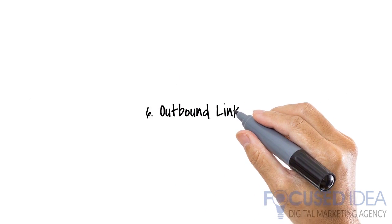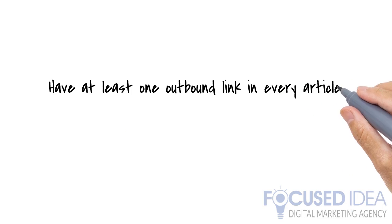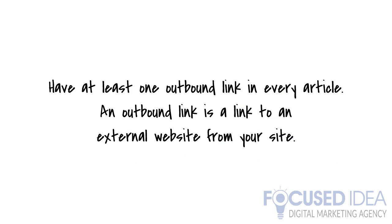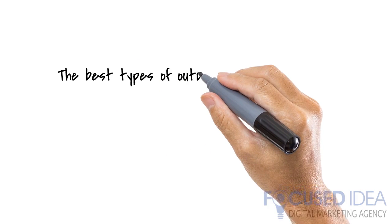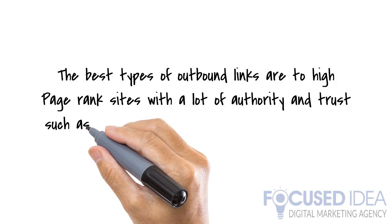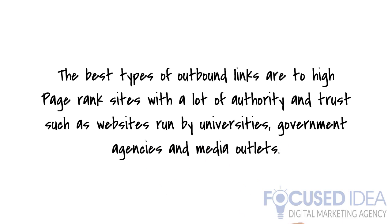6. Outbound Links. It is equally important to have at least one outbound link in every article. An outbound link is a link to an external website from your site. The best types of outbound links are to high page-ranked sites with a lot of authority and trust, such as websites run by universities, government agencies, and media outlets. All you need to do is find an article on these sites that is related to the content on your site and link to it.